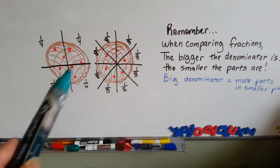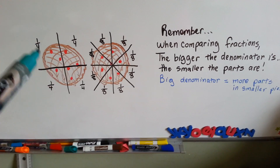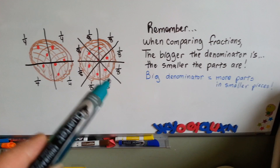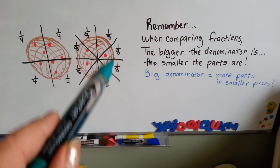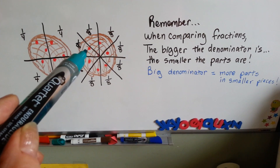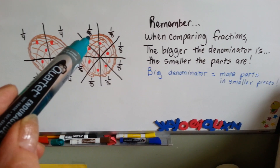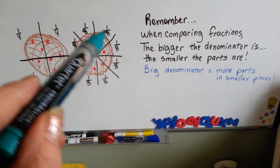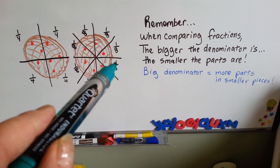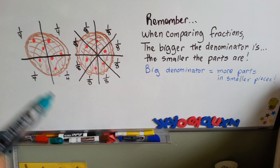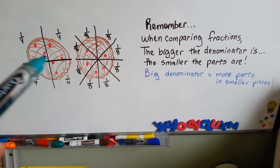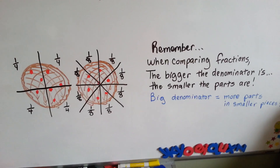If we have two pies and this denominator is a 4 and this denominator is an 8, the 8 is a larger number. There are more parts, but the parts are in smaller pieces. Would you rather have a fourth of a pie or an eighth of a pie? The bigger the denominator gets, the smaller the pieces become, but there's more of them. Because this pie was split into 8 pieces, each piece had to become smaller. This one is split into fewer pieces, so each piece is larger. Remember that when you're comparing fractions.